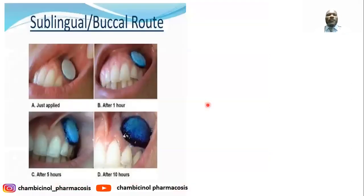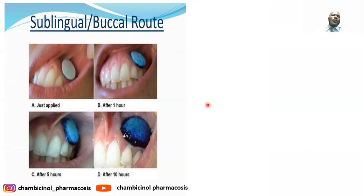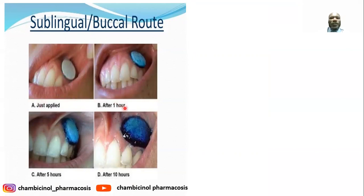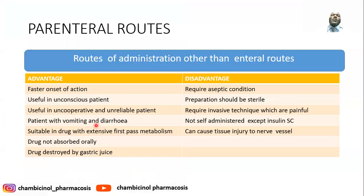The first route is the sublingual or buccal route of drug administration. For sublingual, you put the drug under the tongue. For buccal, the drug is placed between the gums and the cheek. These show the different times in which the drug undergoes changes — after one hour, the drug starts dissolving slowly until it is absorbed. This is especially important for drugs that are non-irritating in nature, as it can irritate the mucosa of the oral cavity.